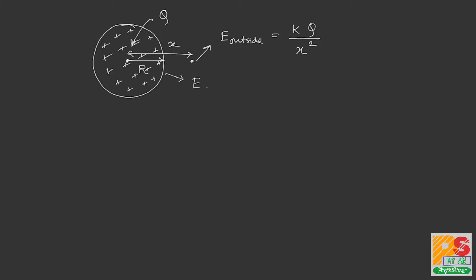For a point on the surface of the sphere, the intensity is E = kQ/R². For any point inside the sphere situated at a distance x from the center, the intensity is E = kQx/R³. These are the three formulas you need to know to solve this question.